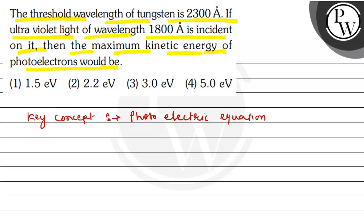According to this equation, kinetic energy of electron equals to h nu minus h nu not. Here h is Planck's constant, nu is the frequency of incident light or incident radiation.